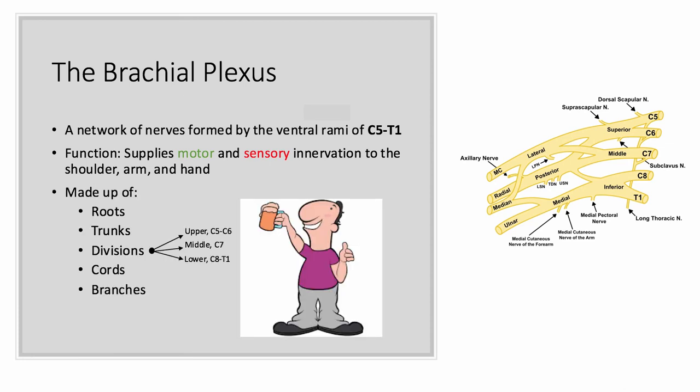The brachial plexus is divided into five main parts: roots, trunks, divisions, cords, and branches. This can easily be remembered by the acronym REACH TO DRINK COLD BEER or ROWDY TOM DRINKS COLD BEER. Use whatever acronym works for you, but just remember, B is always BEER.